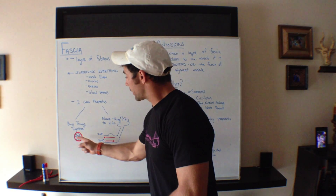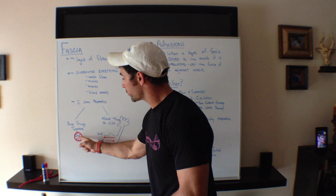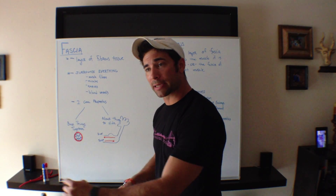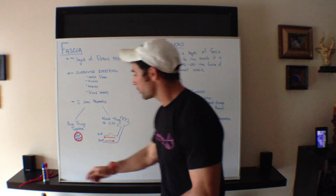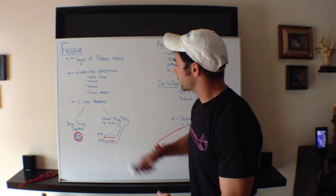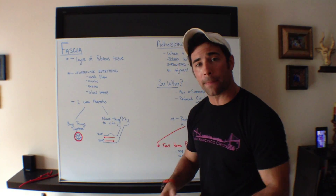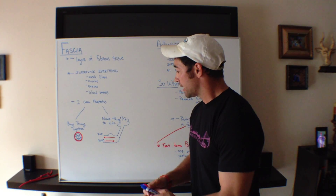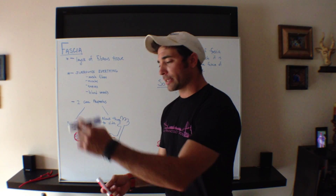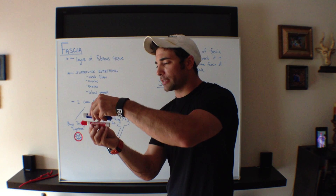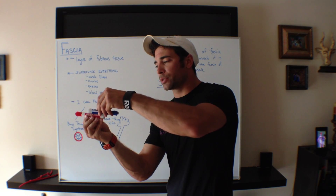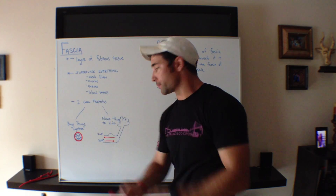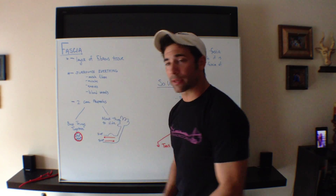Fascia has two cool properties. First, it binds things together — for example, it binds all the muscle fibers together to form the muscle. The other property is gliding: in the example of the bicep and tricep, the bicep is contracting and the tricep is extending, so those two tissues need to slide past each other, and fascia gives them that property and allows that to happen.